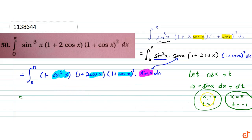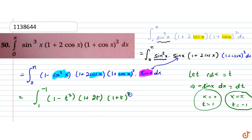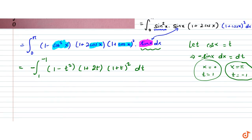After substitution, the integral becomes from 1 to −1 of (1 − t²)(1 + 2t)(1 + t)² times (−dt). Since we have a negative sign, we reverse the limits from −1 to 1 and the negative becomes positive.